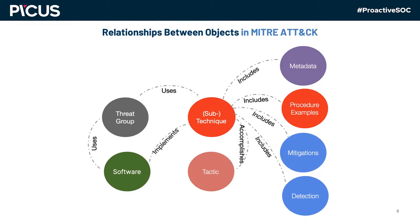MITRE ATT&CK also provides threat groups related to intrusion activity, as well as software utilized by these threat groups. Currently, ATT&CK includes 122 groups and 585 software entries. In the life cycle of a cyber attack, a threat group uses techniques or sub-techniques to accomplish their tactical goals, either manually or via software. MITRE ATT&CK provides valuable information for each technique and sub-technique, such as metadata, procedure examples, mitigations, and detection guidance to help security teams.